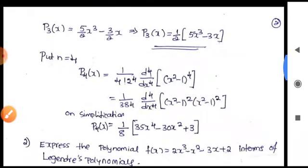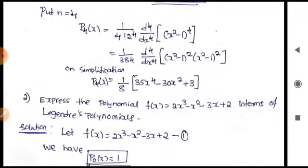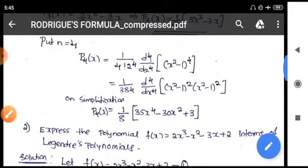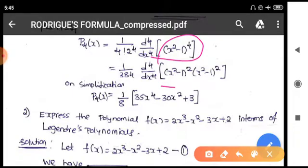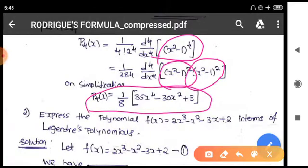Now to get P4(x), put n equal to 4. So P4(x) = 1 divided by 4 factorial times 2⁴, times the fourth derivative of (x² - 1)⁴. Since 4! = 24 and 2⁴ = 16, we get 24 × 16 = 384, so the factor is 1/384. After expanding (x² - 1)⁴ and taking four derivatives, then simplifying, we get P4(x) = (1/8)(35x⁴ - 30x² + 3).